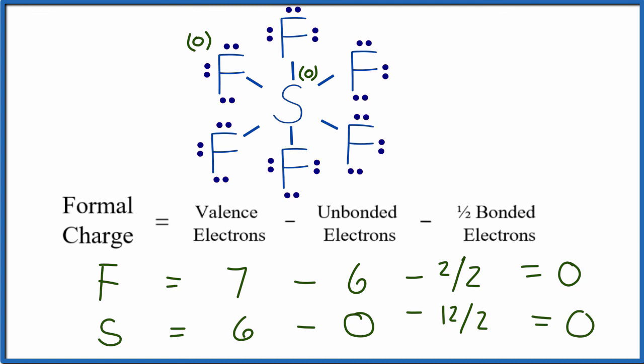is zero. So the formal charge for each element in this molecule is zero. When we calculate formal charges, that's a good thing. That means this is the best or most favorable Lewis structure. Those are the formal charges for SF6.